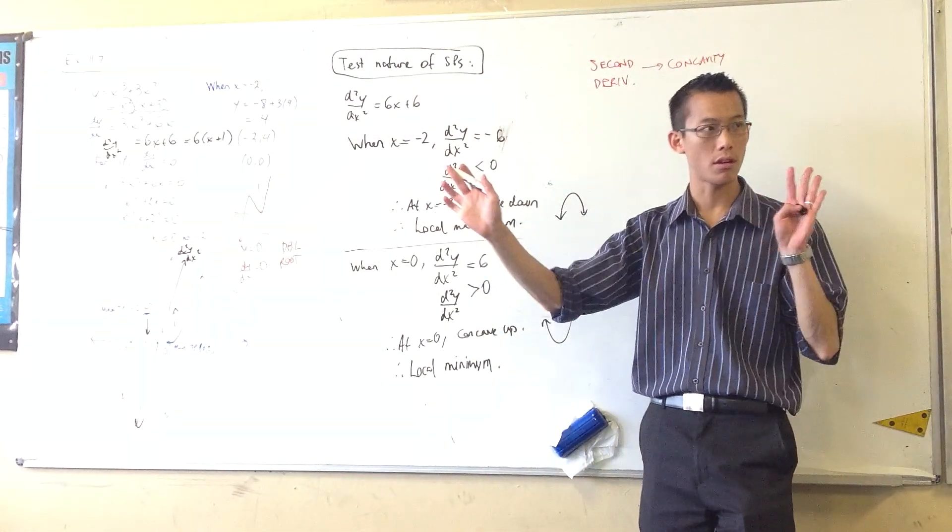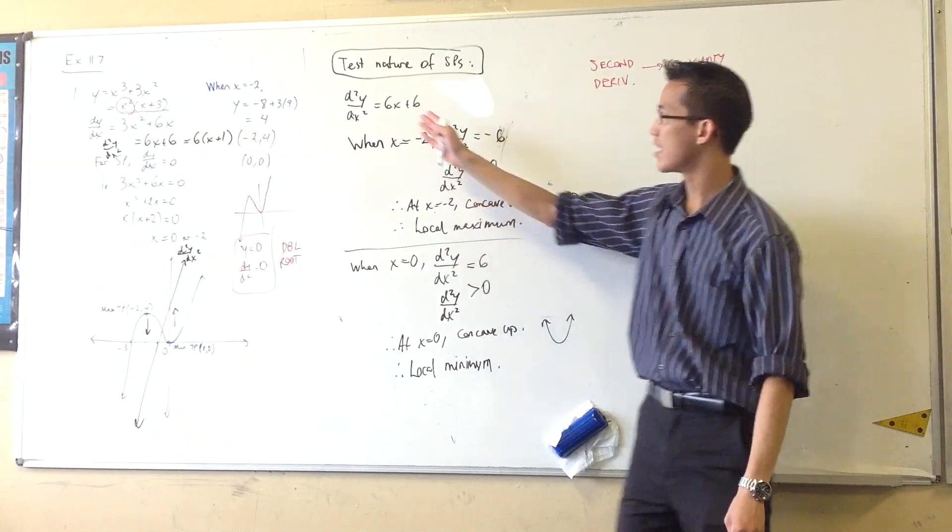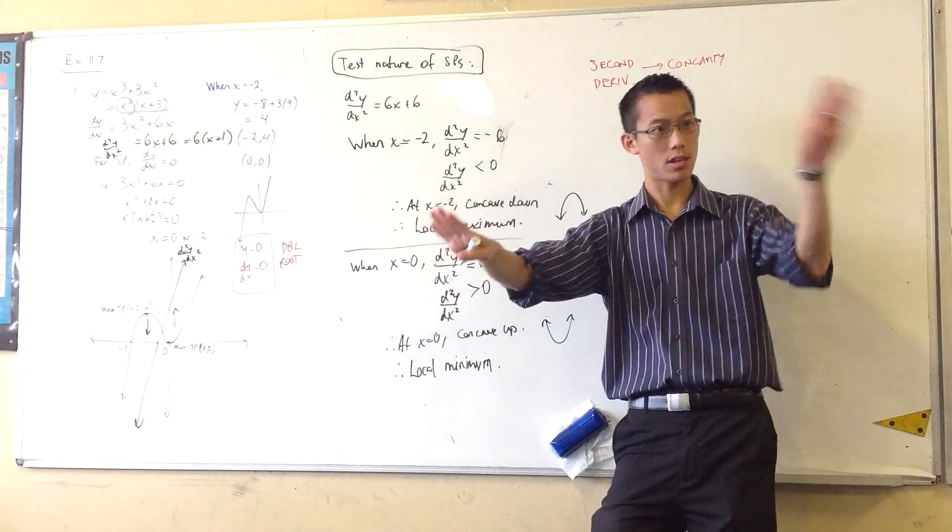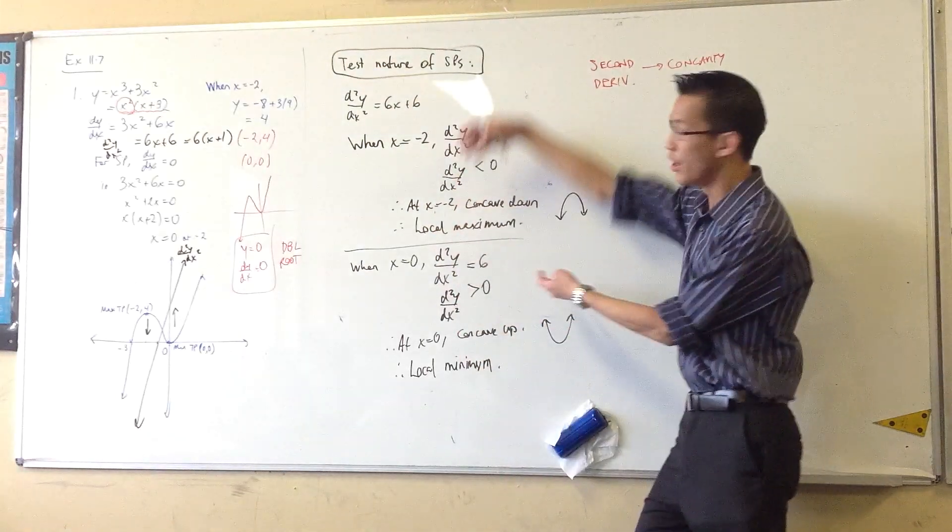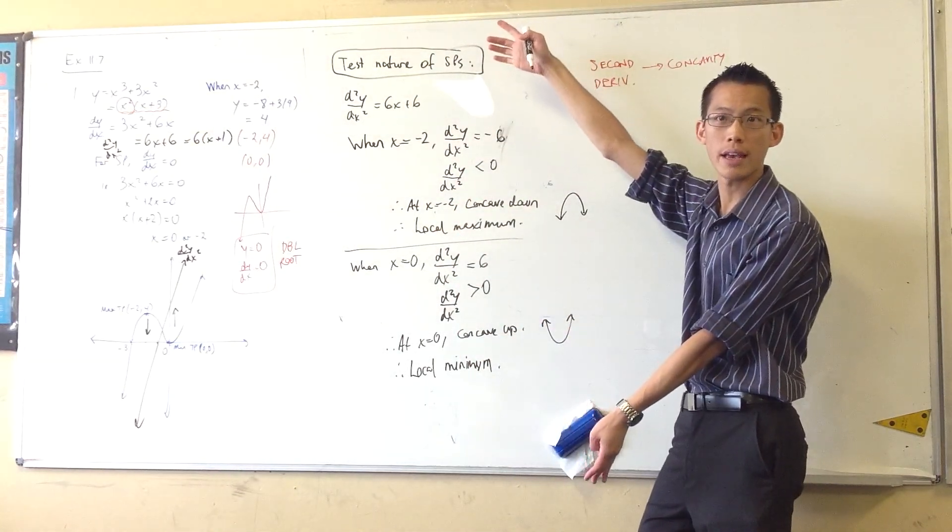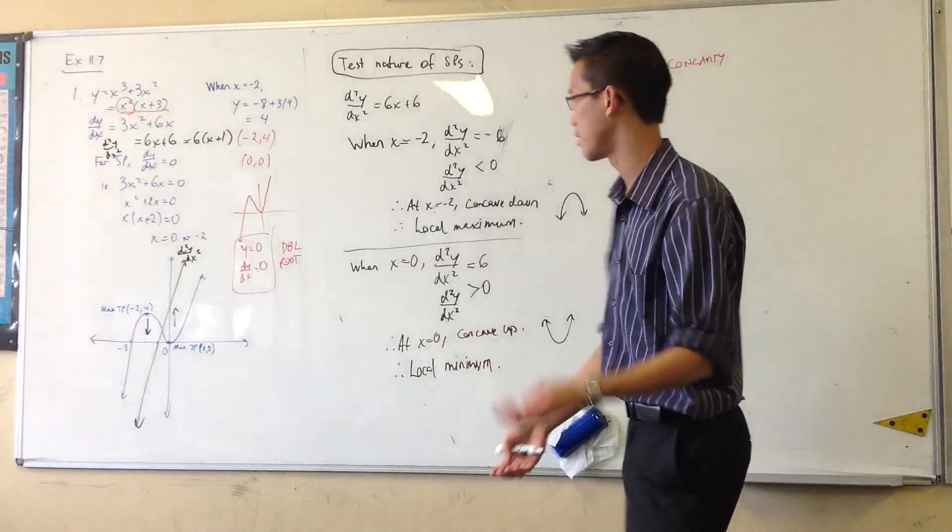but it's also an alternative way of determining the nature of a stationary point. And you need to know both. You need to know I can test the first derivative to the left and to the right, or you can use the second derivative.